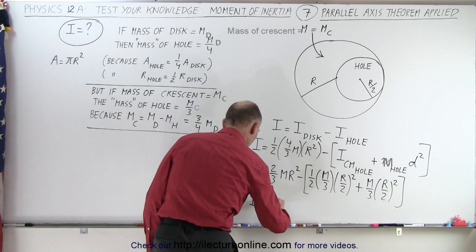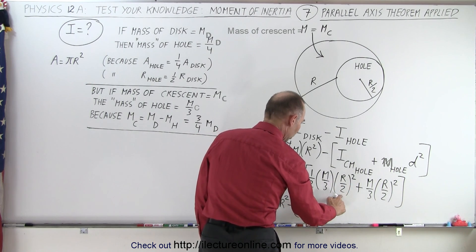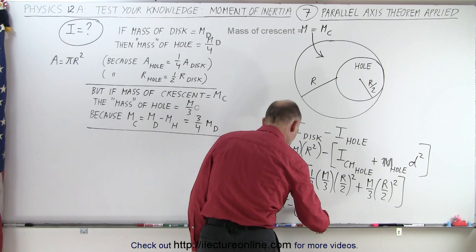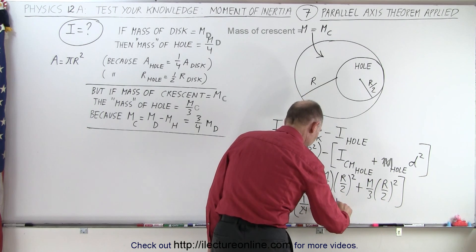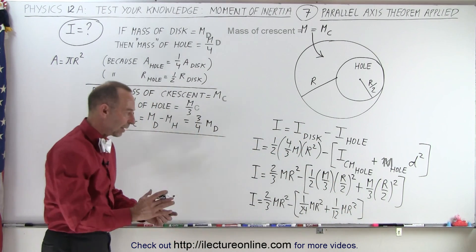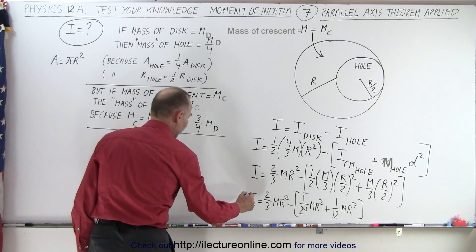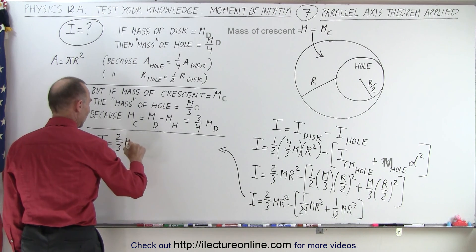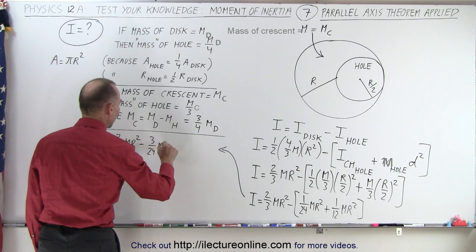Simplifying: the moment of inertia equals two-thirds MR² minus the bracketed terms. Inside the brackets, one-half times one-third times one-fourth gives one over 24 MR², and one-third times one-fourth gives one over 12 MR², which equals two over 24 MR². Adding those together: one over 24 plus two over 24 equals three over 24 MR².